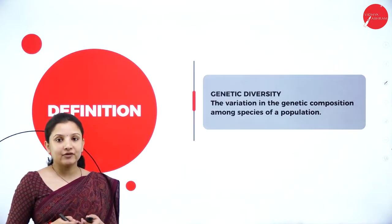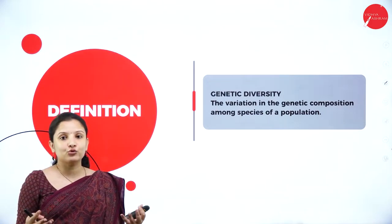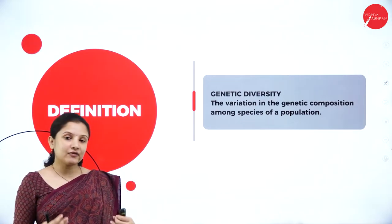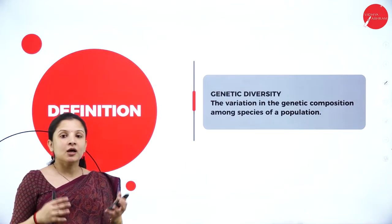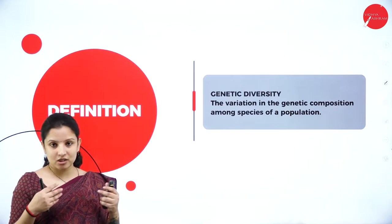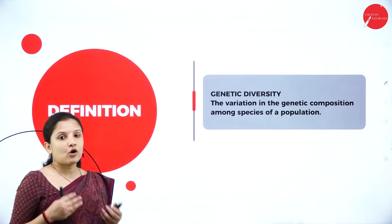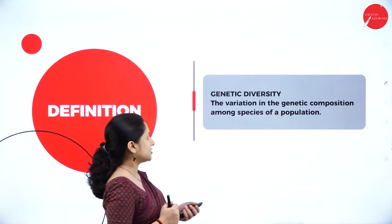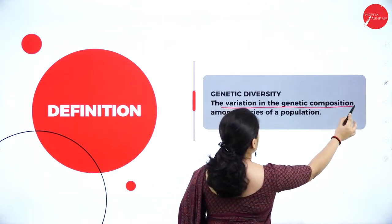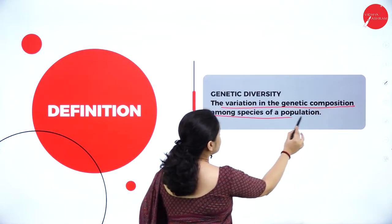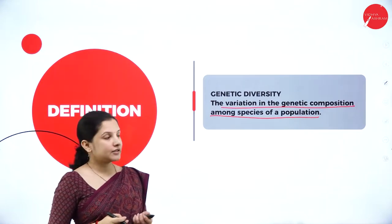Talking about genetic diversity — the name itself suggests it has something to do with genes. The diversity of organisms found on this planet because of the alteration in genes or because of different sets of genes present in them we call it as genetic diversity. The variation in genetic composition among species of a population is defined as genetic diversity.